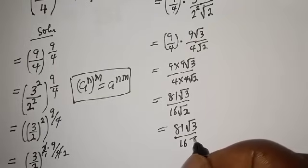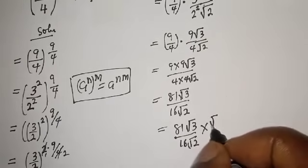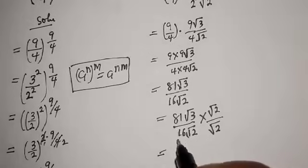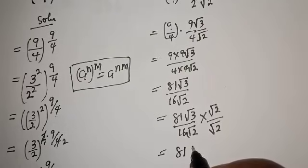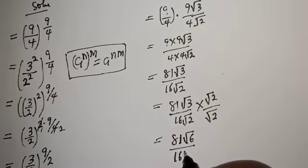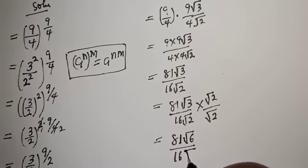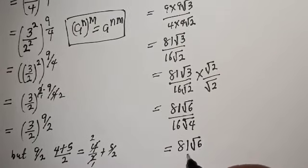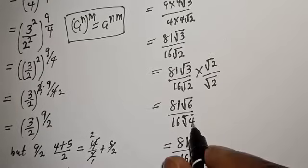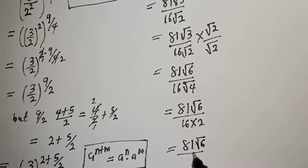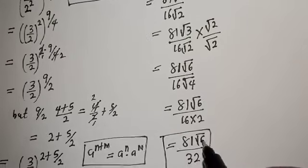Multiplying root 2 by root 2 gives root 4. So we have 81 times √6 over 16, multiplied by square root of 4, which equals 2. This gives us 81√6 over 16 times 2, which is 81√6 over 32. This is the final answer.